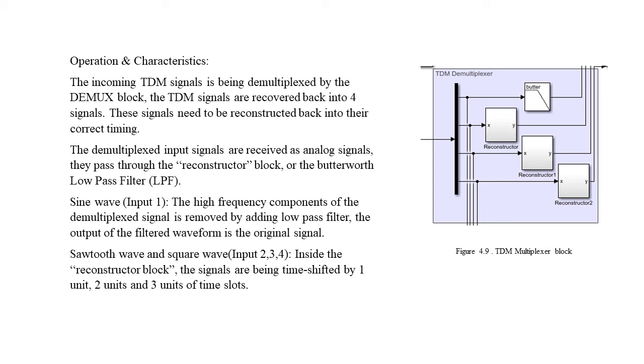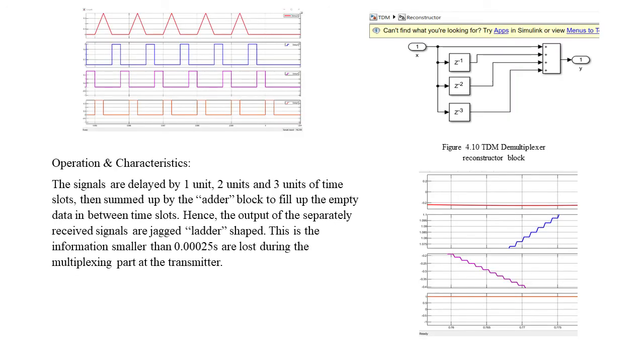For the sine wave input one, the high-frequency component of the demultiplexed signal is removed by adding a low-pass filter. The sawtooth waves are being time shifted by one, two, and three units of time delay. You can see in the diagram, even though after the signals are being output and shown in the graph, you can see there's a jagged ladder shape of the waveform. Some information less than 0.25 milliseconds is lost during the multiplexer sampling part at the transmitter.